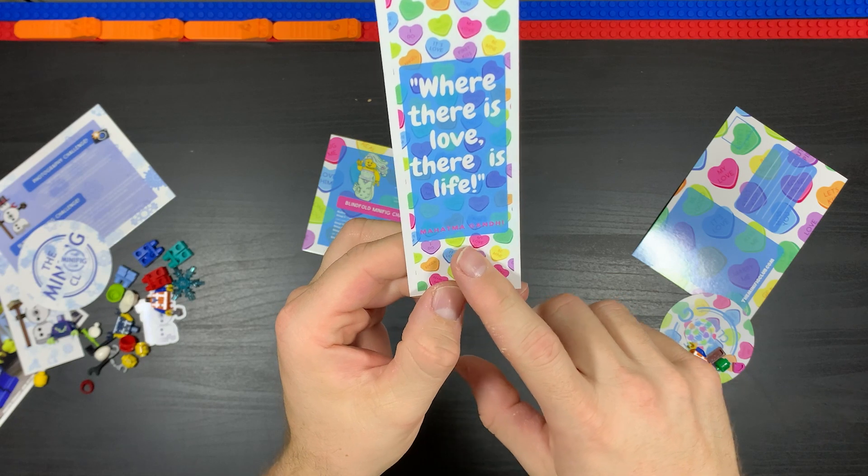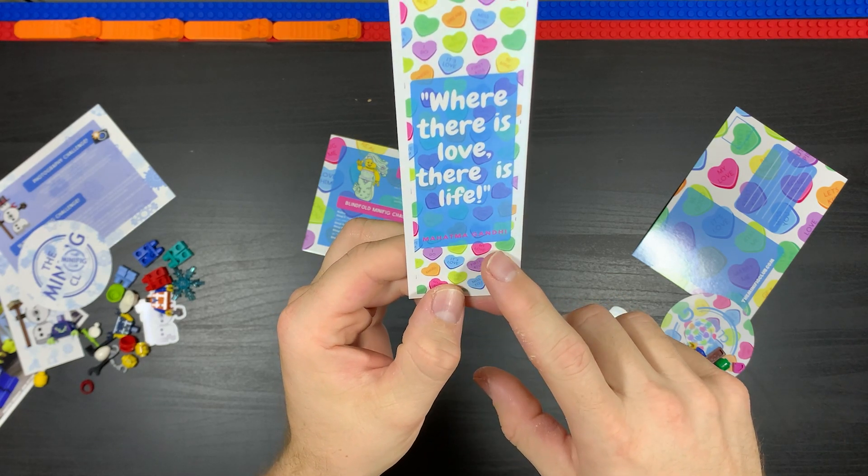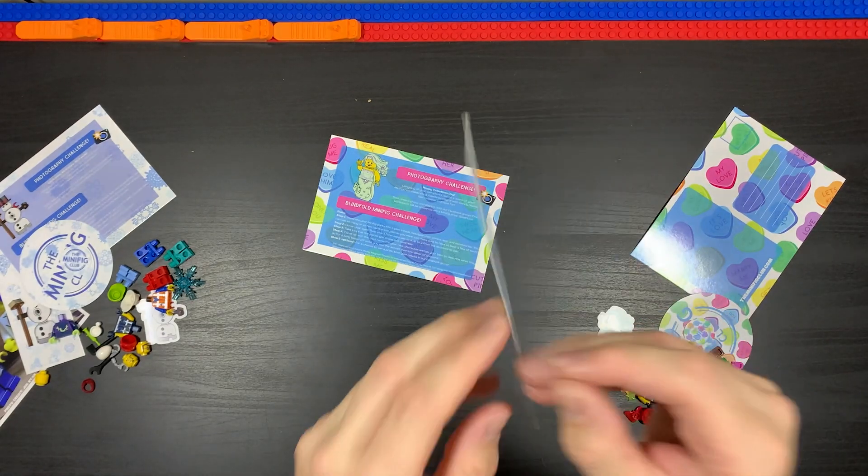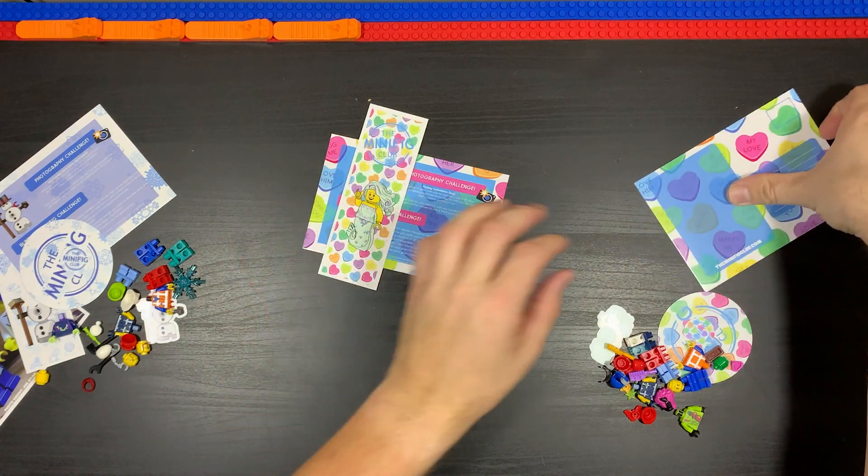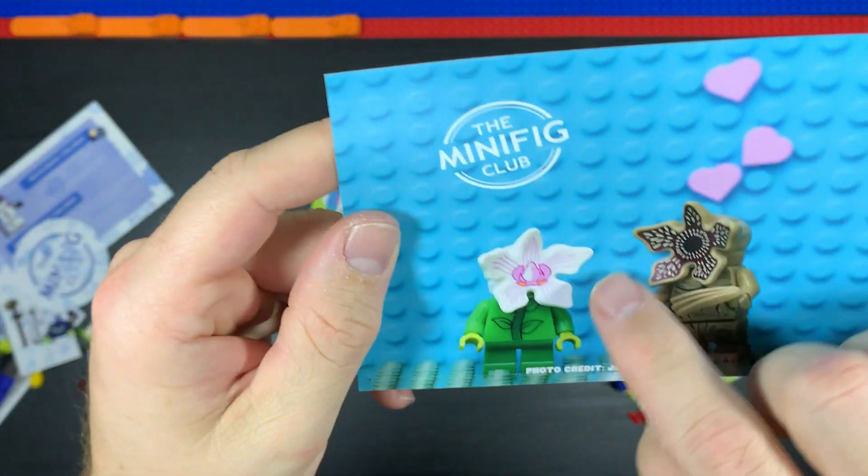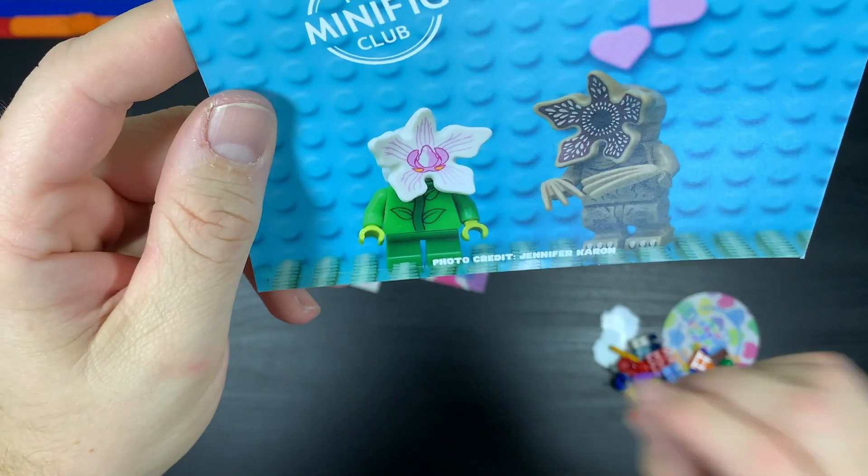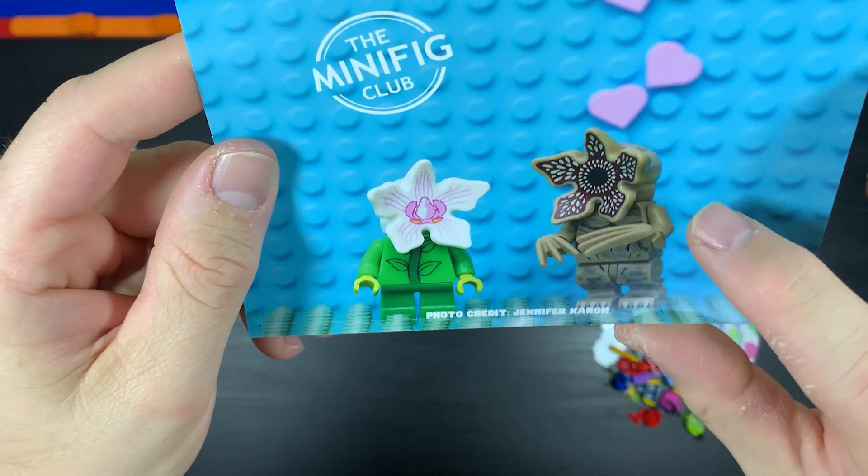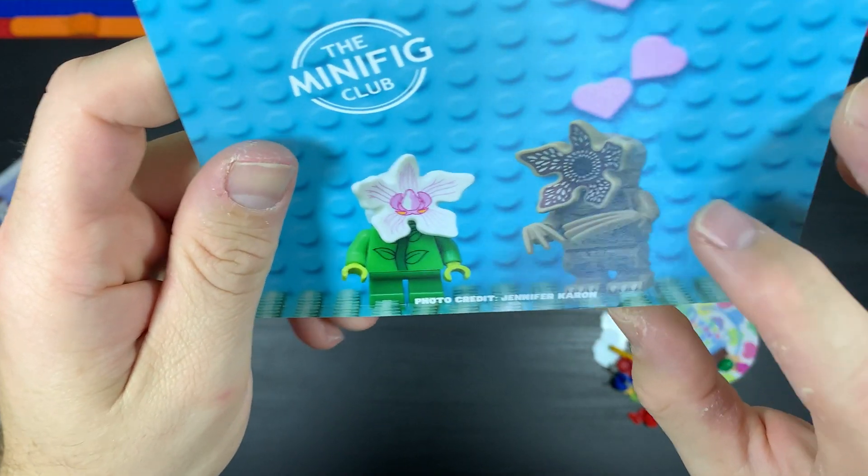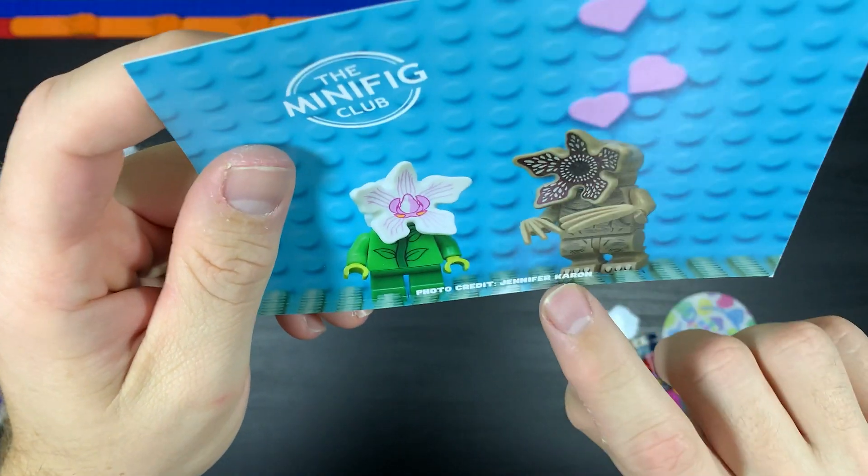We get ourselves a nice little postcard - flower people. That's the Stranger Things Gamma Gordon thing there. This photo was done by Jennifer Karen.